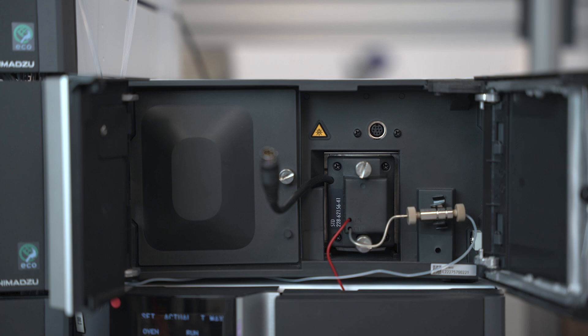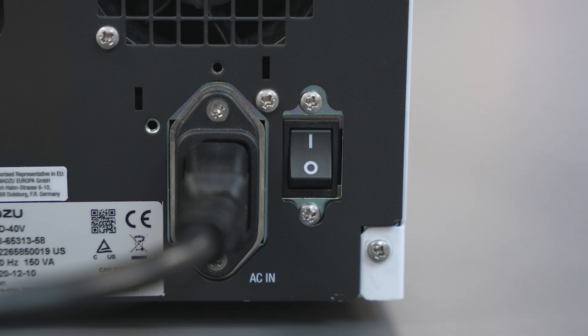First, we must remove the flow cell. To remove the flow cell, turn the instrument off from Lab Solutions. Once the instrument is shut down, turn the main power switch located by the power cable at the back of the detector off.